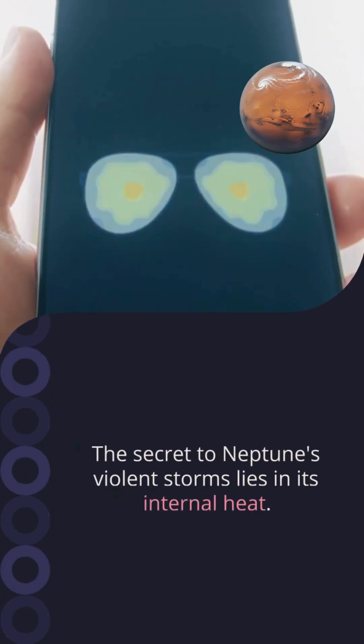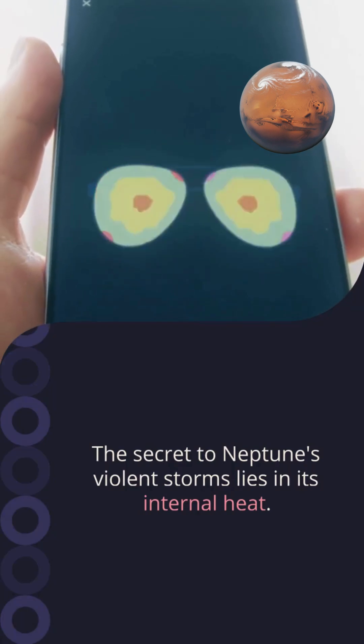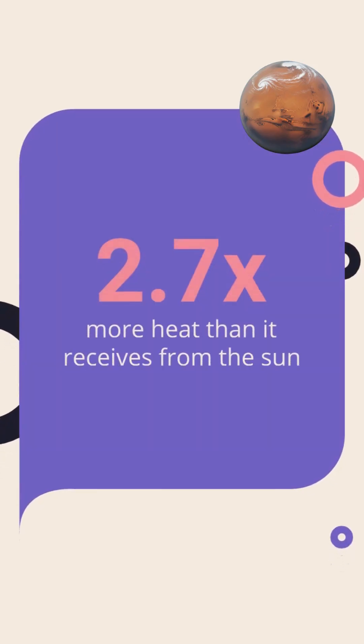The secret to Neptune's violent storms lies in its internal heat. Neptune generates approximately 2.7 times more heat than it receives from the sun.